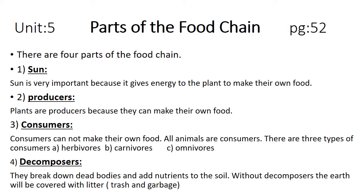The second important part of the food chain is the producers. Producers are basically plants — those that can make their own food. As the word 'produce' means to make something, plants in the food chain are producers because they have the capability to make their own food. The third part of the food chain are the consumers. Consumers cannot make their own food.